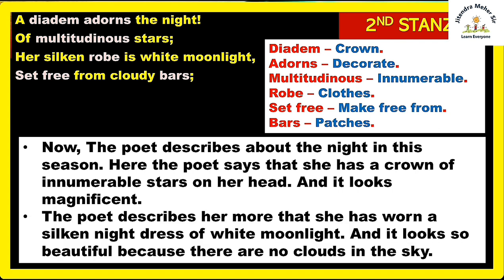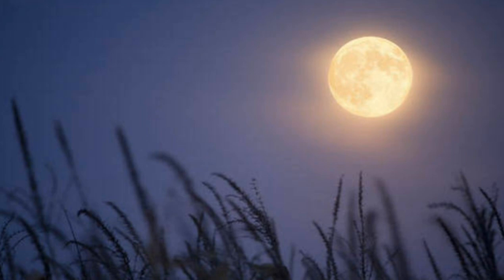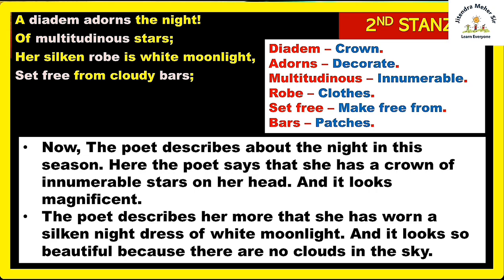Next lines: 'Her silken robe is white moonlight, set free from cloudy bars.' The poet describes her night dress — her daytime dress was the flowers on the grass, but now she has worn a silken white moonlight dress. The white moonlight is clearly visible and looks beautiful because there are no clouds in the sky. The sky is now free from the cloudy patches, so it looks wonderful.